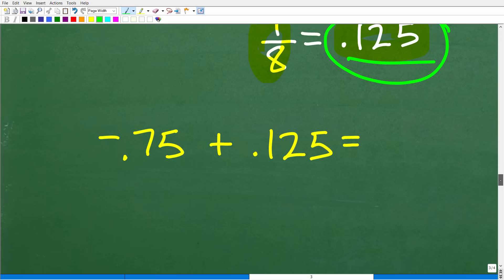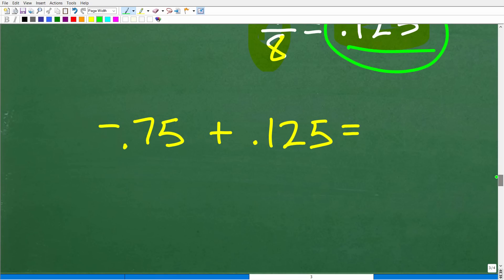Alright. So now we need to figure out what this is equal to. So we have negative point seven-five plus point one-two-five. Now, we have a negative number, and we're adding it to a positive number. So we need to think about is the answer going to be positive or negative.